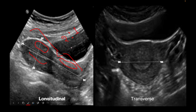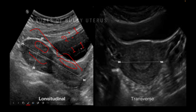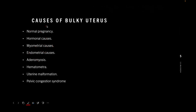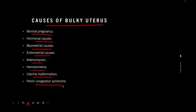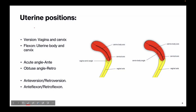In postmenopausal and pediatric stages, the ratio of the length of the uterine body to that of the cervix is usually 1:1. There are various causes of uterine enlargement. The most common cause is normal intrauterine pregnancy; molar pregnancy or postpartum uterus can also be larger than usual. Hormonal causes like exogenous hormones, myometrial and endometrial tumors, diffuse adenomyosis, uterine adenomyomas, hematometra, uterine malformations, and pelvic congestion syndromes can all lead to an enlarged uterus.